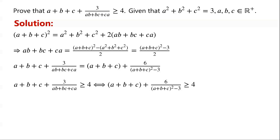Therefore, proving that (a + b + c) + 3/(ab + bc + ca) ≥ 4 is equivalent to proving that (a + b + c) + 6/[(a + b + c)² − 3] ≥ 4. Since a, b, and c are positive real numbers, ab + bc + ca > 0, so (a + b + c)² − 3 must be greater than 0.